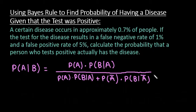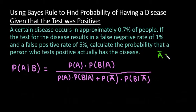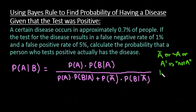I already have Bayes' rule written out. Bayes' rule says that the probability of A given that B has already occurred is equal to the probability of A times the probability of B given A, divided by the probability of A times the probability of B given A, plus the probability of not A times the probability of B given not A. The A with the bar over it can also be written as tilde A or A prime depending on your text, and this is just read as 'not A.' The line drawn between B and A is read as 'given.'